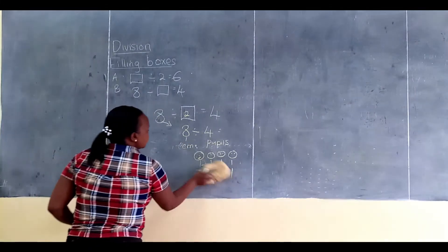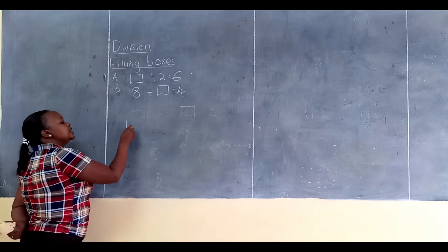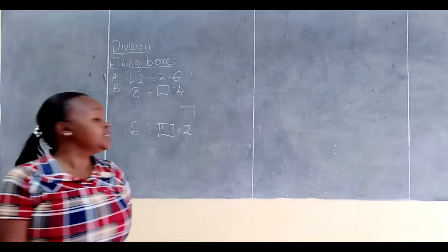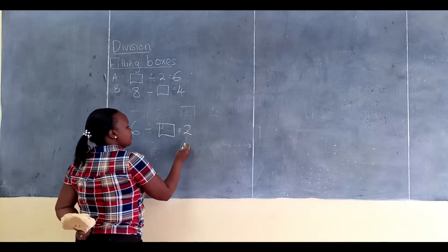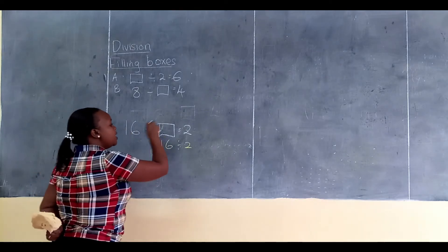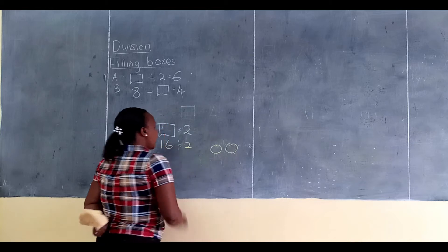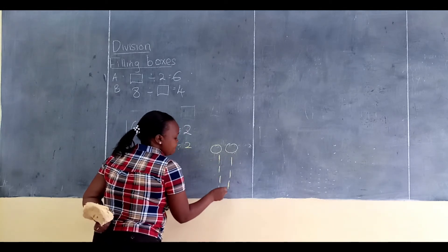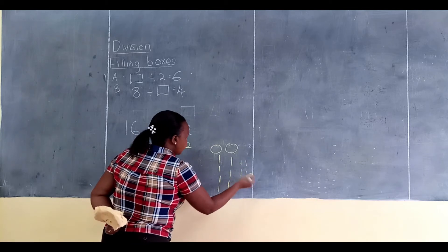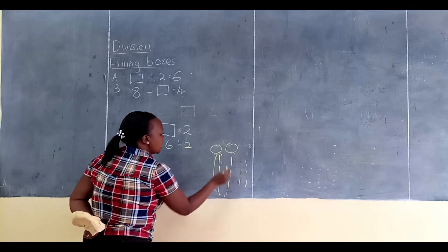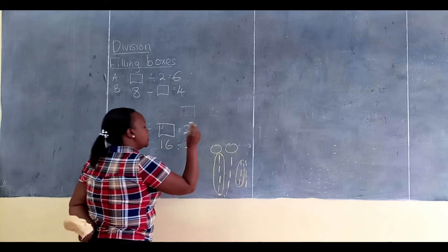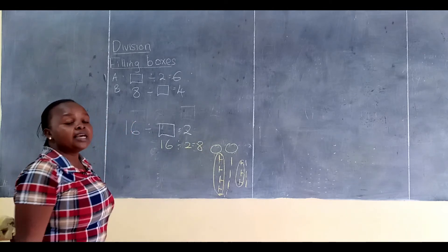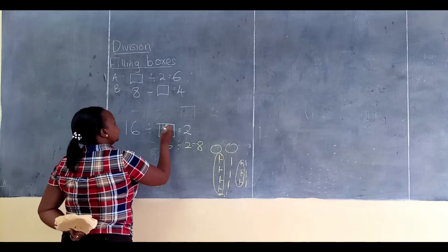Let's have another example: 16 divided by a box is equal to 2. I take the big number divided by the small one — 16 divided by 2. So my 2 pupils: I share my 16 items among them. Then I check what one child has gotten: 1, 2, 3, 4, 5, 6, 7, 8. So the answer is 8, and that 8 is the missing number in the box.